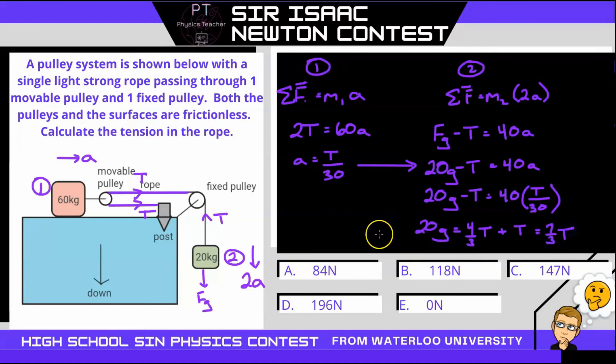So now I'm left with, let me rewrite this over here, so I have a bit of room. 20G is equal to 7 over 3T. So multiply both sides by 3, divide by 7, and we get tension as 84 newtons, when we sub in G as 9.81 newtons per kilogram. So our answer is A.